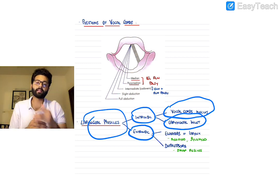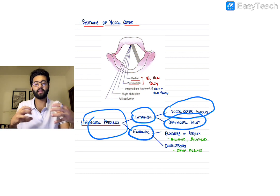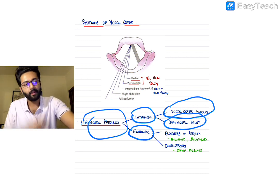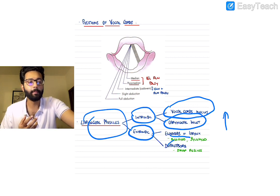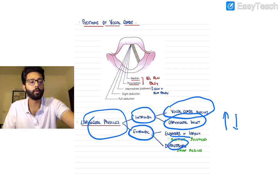Coming to the extrinsic muscles — that is, the muscles that lie outside the larynx but act on the larynx — they are further divided into elevators of the larynx, muscles that raise the larynx, and depressors of the larynx, muscles which pull down the larynx.